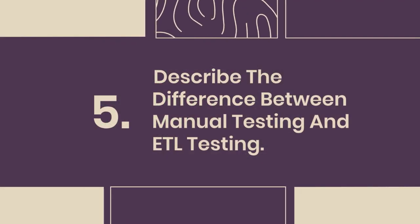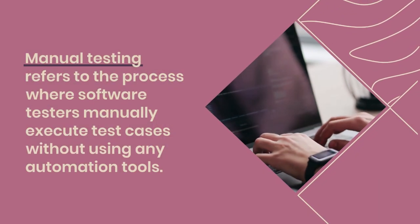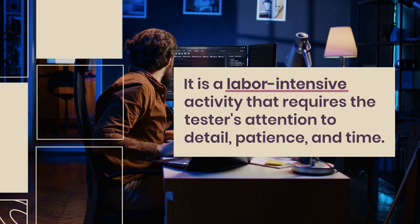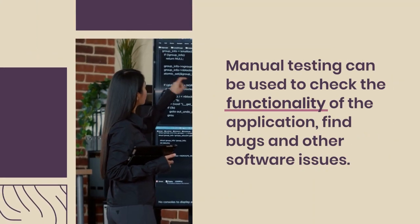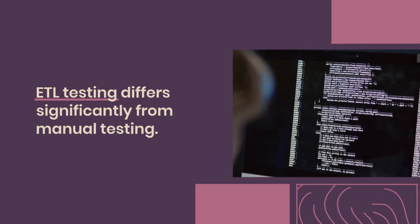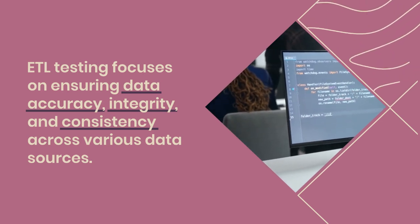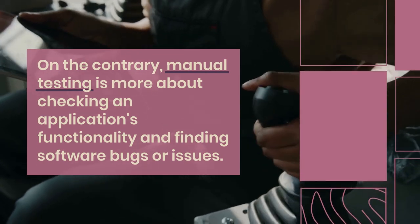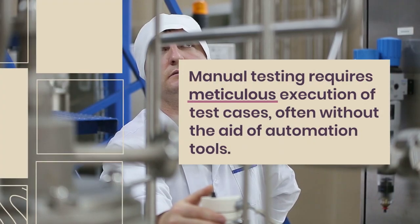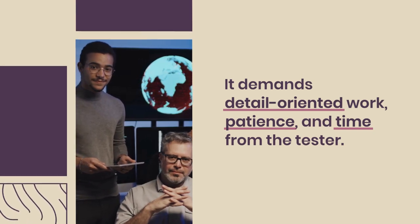Question 5: Describe the difference between manual testing and ETL testing. Manual testing is where testers manually execute test cases without automation tools — a labor-intensive activity requiring attention to detail, patience, and time — used to check application functionality and find bugs. ETL testing differs significantly: it focuses on ensuring data accuracy, integrity, and consistency across various data sources, whereas manual testing is about checking application functionality and finding software bugs, often requiring meticulous execution of test cases without automation.